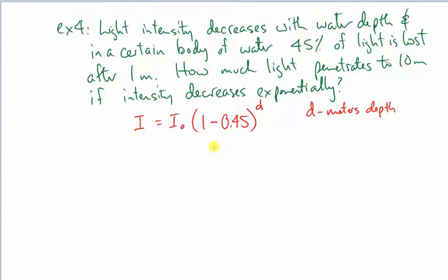So one minus 0.45 is 0.55, which raises an important point. By the way, I know that the value of d in this case is 10 meters, so I can substitute that.